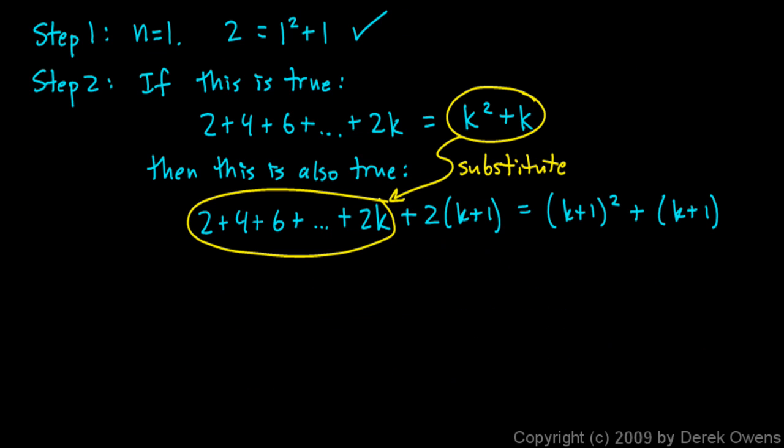So let me make a little more room, and then rewrite it. So I write k squared plus k plus, and I still have this part, 2k plus 1 equals, on the right-hand side, k plus 1 squared plus k plus 1.